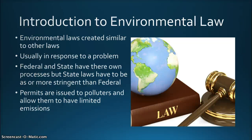Environmental laws, as most other laws, are created at the federal level by Congress and must be signed and approved by the President. The major exception is when the President issues an executive order that does not need Congressional approval. There are cases where a law is passed by Congress but not approved by the President, but Congress then overrides the President's veto. This occurred with the 1970 Federal Water Pollution Control Act, now the Clean Water Act.